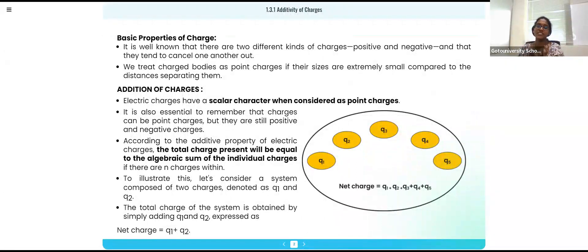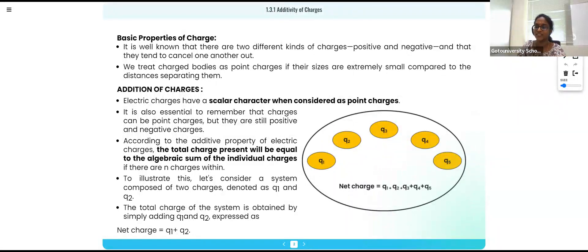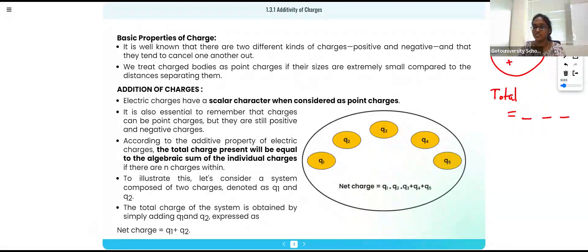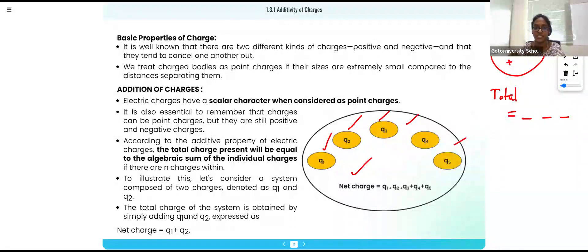The first property is the additive property of charge. It is a simple thing — when there are charges inside an object, they may be positive or negative. The total charge of the body is equal to the sum of each individual charge. Adding each charge gives us the total charge — that is called the additive property of charge.